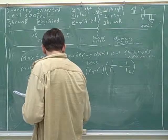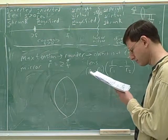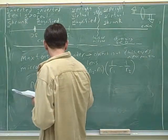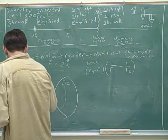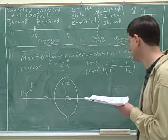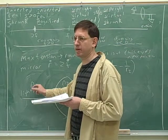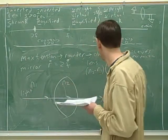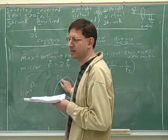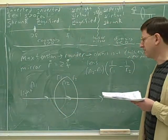Are the n's the indexes of refraction? Yeah, the n's are indices of refraction. So n1 is the original index of refraction of where the light is coming in from. And n2 is the index of refraction of the material that the lens is made out of. R1 refers to the first side of the lens that the light hits, and R2 refers to the second side of the lens that the light hits.